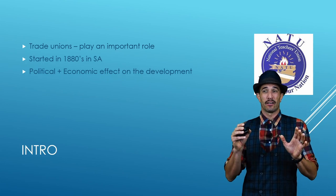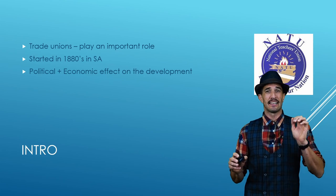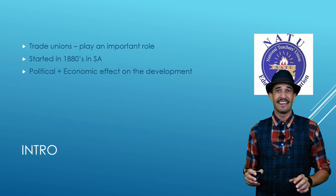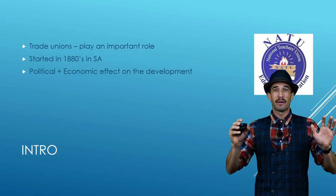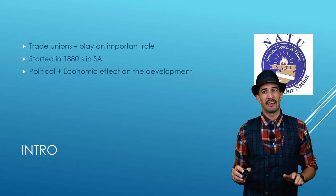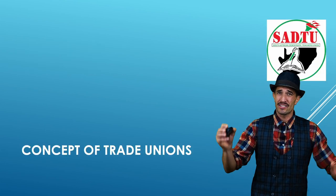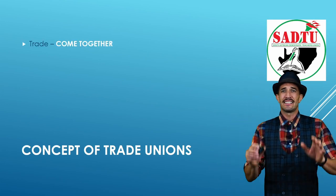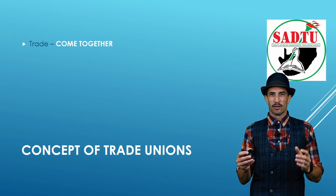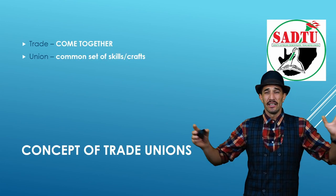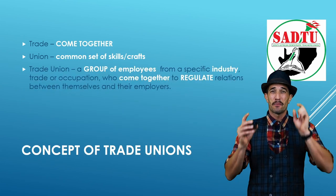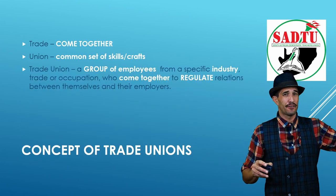Trade unions started in South Africa in 1880. The political and economic climate had a very big effect on development in our country. People were not treated fairly, they weren't paid fair salaries, and it was all driven by socio-economic and political issues. The concept of trade unions is that 'trade' means people of the same trade — your skill, your artisan — come together, and 'union' is where they come together with a common set of skills or craft.